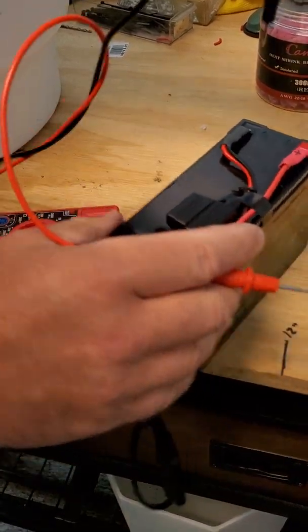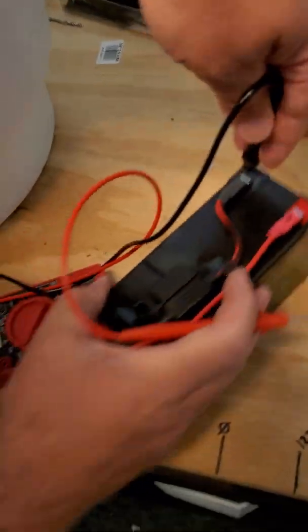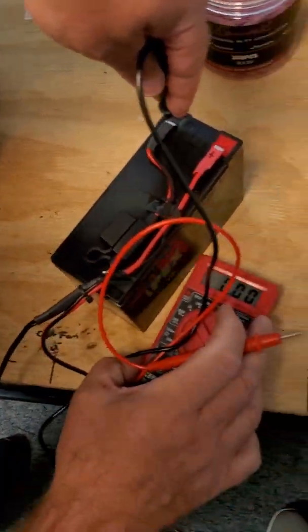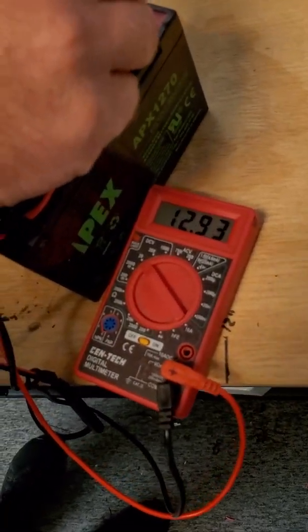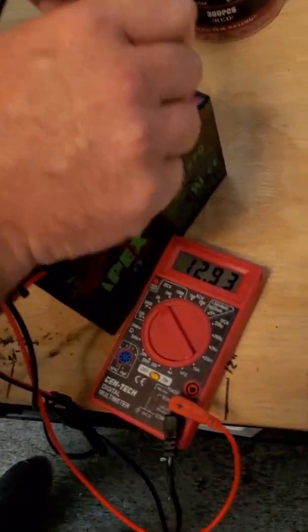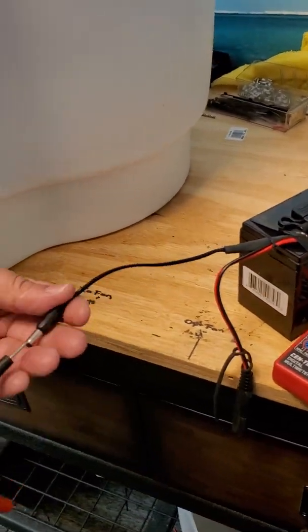First thing we'll do is place the probes directly on the terminals, red to red, black to black. You see we have 12.93 volts there. Next step is to check our barrel connector.